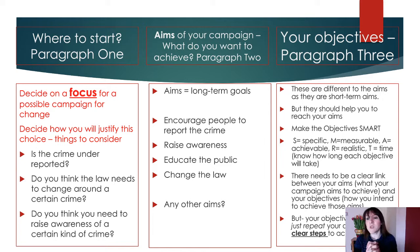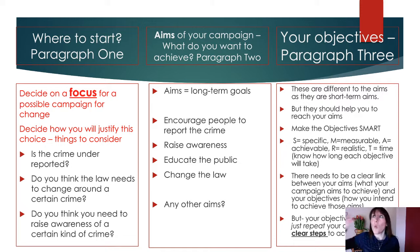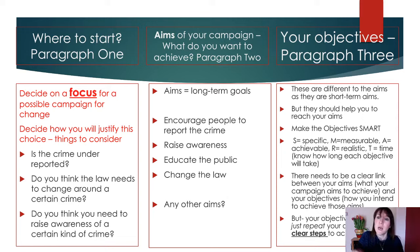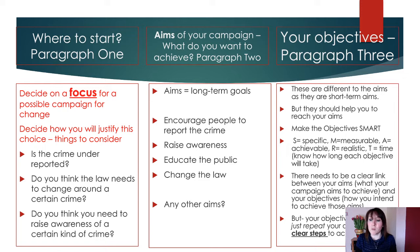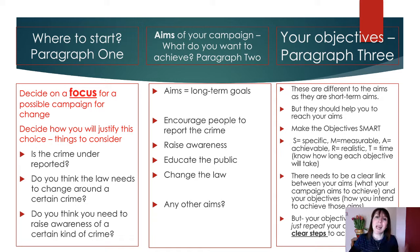Your objectives are different from your aims — they are short-term aims. Objectives are how you achieve your long-term aims; think of them like a to-do list. You probably need two or three objectives for each aim. How are you actually going to raise awareness? What are you actually going to do? Be specific. They should help you reach your aims and need to be SMART: specific, measurable, achievable, realistic, and within a timeframe. There needs to be a clear link between your aims and objectives, but objectives shouldn't just repeat your aims.